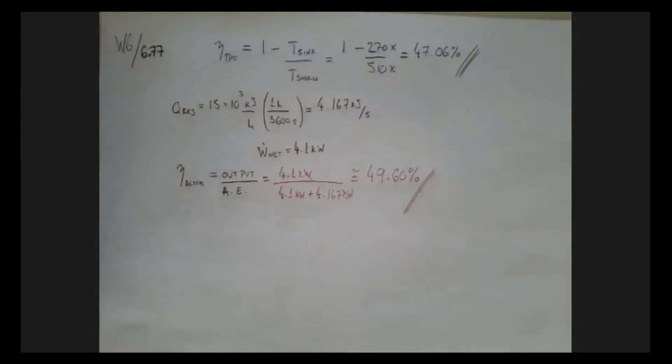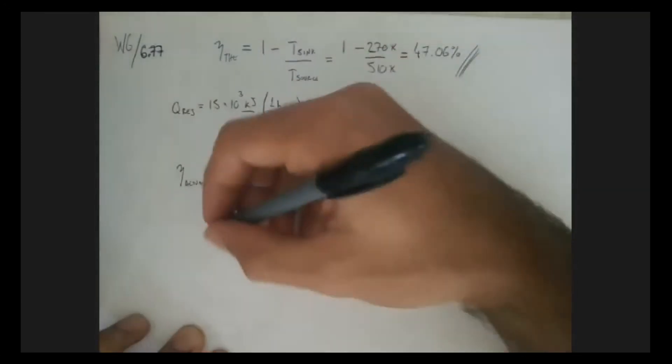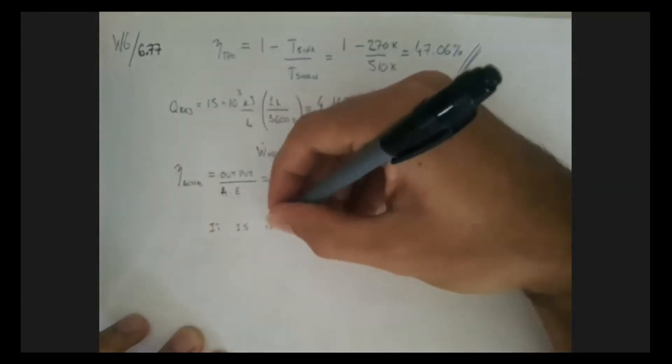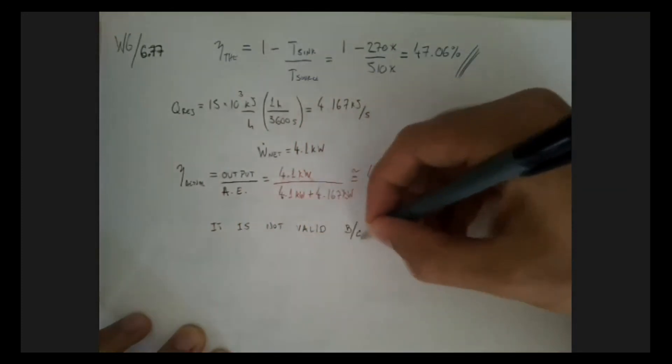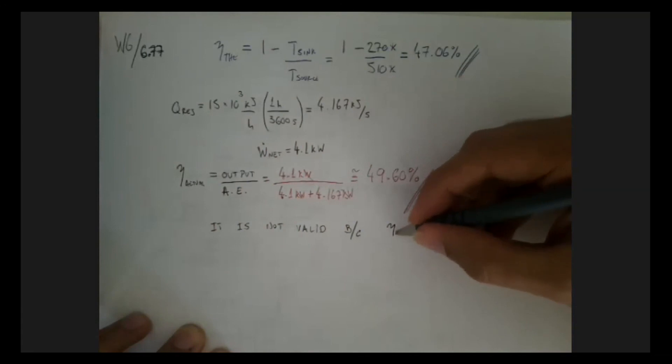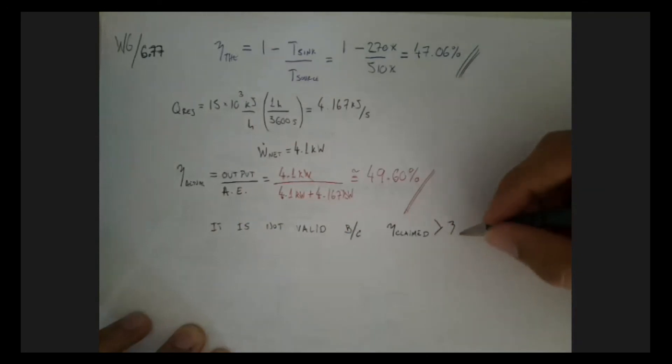So how would we write this if we're doing an assignment, an exam, or if you're actually doing a report for someone, or you're wanting to buy this thing? Would you buy it? No, you wouldn't. So we would say the inventor's claim is not valid because it violates the second law of thermodynamics. The claim states a 49.6% thermal efficiency when the maximum achievable under the given conditions is 47.06%. So the question is, is the claim valid? So it is not valid because the claimed efficiency is greater than the maximum efficiency.